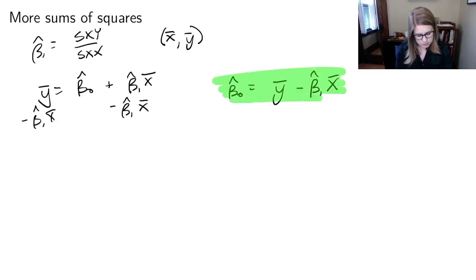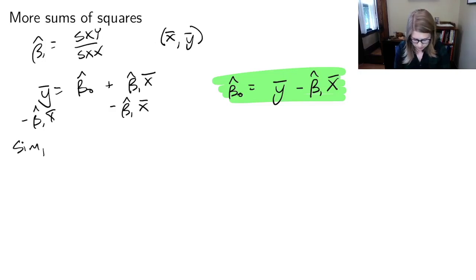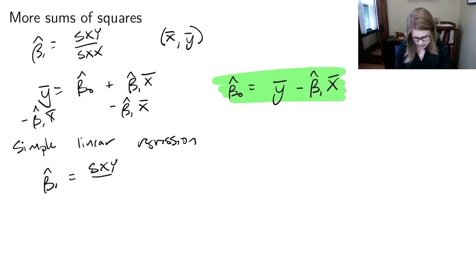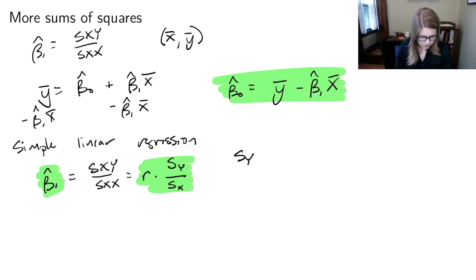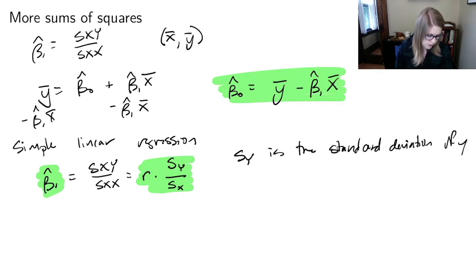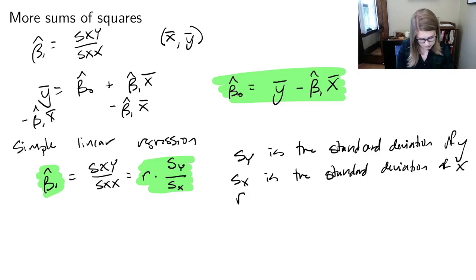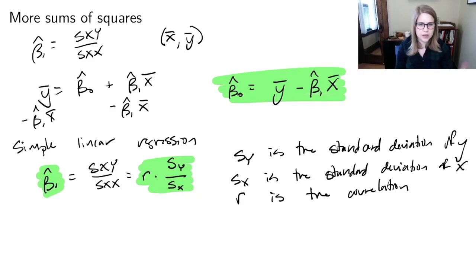That's another formula you should be able to derive. And there's one more trick: in simple linear regression, beta_1_hat equals S_XY over S_XX, which also equals R times the standard deviation of Y over the standard deviation of X, where S_Y is the standard deviation of Y, S_X is the standard deviation of X, and R is the correlation. Once you have beta_1_hat, you can use that to find beta_0_hat.